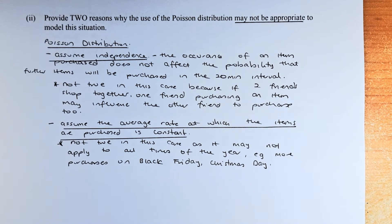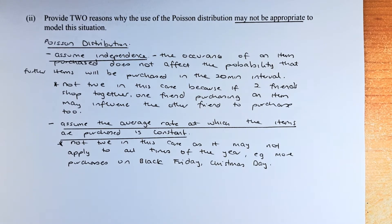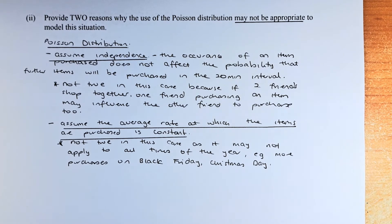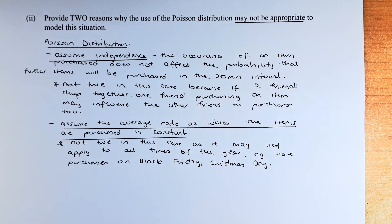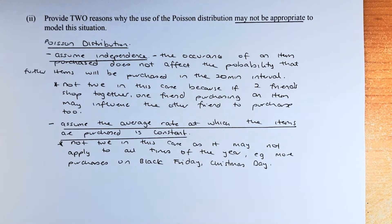We are going to assume independence. The occurrence of an item purchased does not affect the probability of further items being purchased in the 20-minute interval. But in our case, it is not true because if 2 friends shop together, one friend that is purchasing an item may influence the other friend to purchase the same item too. So that is why that is not independent at all. So that is the first criteria.